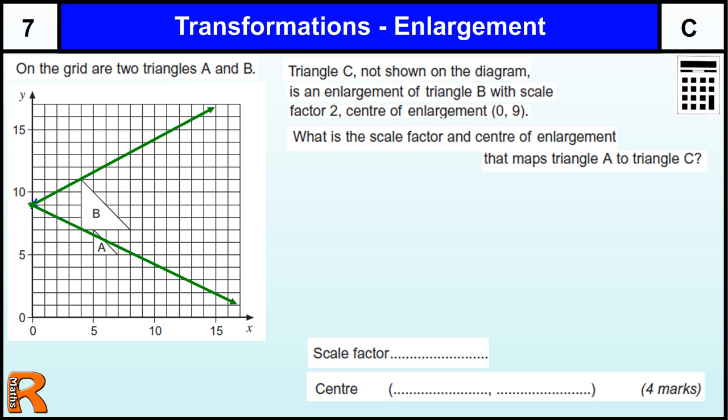So triangle B, let us just use a different color again. Scale factor 2, so it is going to be twice as big. So this is 1, 2, 3, 4, so we have got to look for a point that is 8.